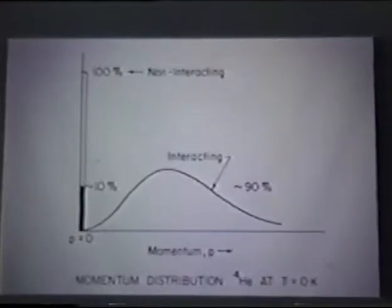Particles are in one momentum state at rest, which corresponds to the state p equals zero. As you increase the temperature, the occupation decreases and goes to zero at what's called the lambda point, where the helium goes from superfluid helium to normal helium.